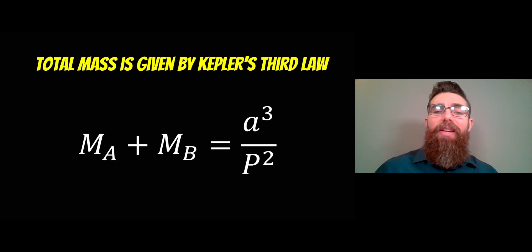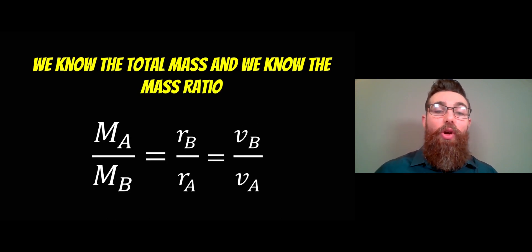Once we've got a, we can then look at Kepler's third law. Here you're going to have the total mass of the system, which is the mass of star A plus the mass of star B, is equal to the separation between two stars cubed divided by the period squared. Once we've got that we can then actually get a mass of an individual star because we know the total mass, and therefore we know the mass ratio. The mass ratio is going to be equal to the ratio of the orbital radiuses and the orbital velocities as well. Once we know that we can then work out an individual mass for one of the stars. That's the most accurate way to get a mass of a star.